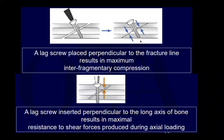For screw placement, aim as perpendicular to the fracture line as possible for maximum compression. More perpendicular to the long axis of the bone gives more shear forces. You have to decide between screw and plate if you can't achieve ideal angle. This is similar to closing base wedge fixation, where you use both screw positions to prevent shortening, shearing, and get compression across the osteotomy.